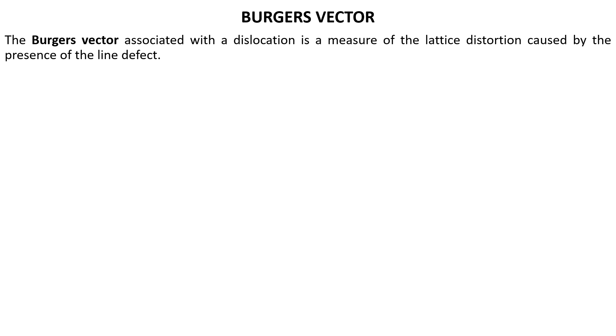Basically Burgers vector quantifies the extent of the atomic displacement due to the dislocation, which could be edge or screw dislocation.